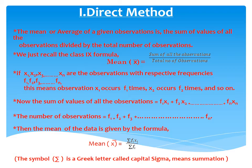Similarly, we have to find the sum of all frequencies, that is the total number of observations: f1 + f2 + f3 till fn. If you add all the frequencies, we get sigma fi, the total number of observations. Using these values, the formula for mean is: x-bar = sigma fi xi divided by sigma fi. The numerator sigma fi xi is the sum of all observations, and the denominator sigma fi gives the total number of observations. This is the formula used to find the mean of any grouped data by the direct method.